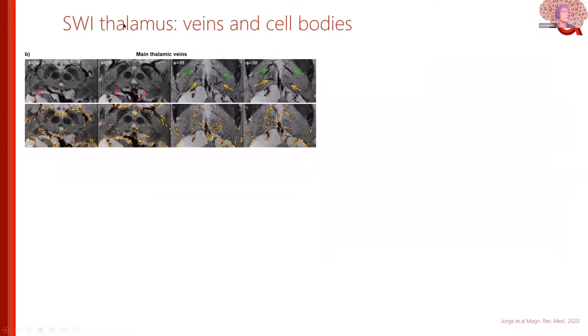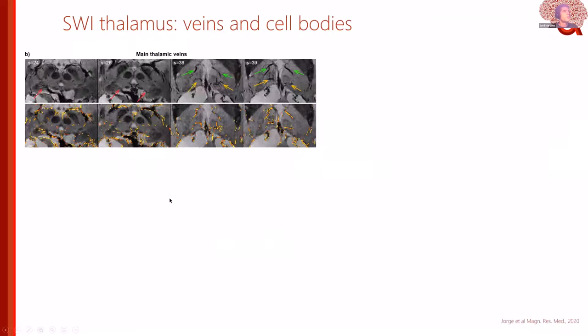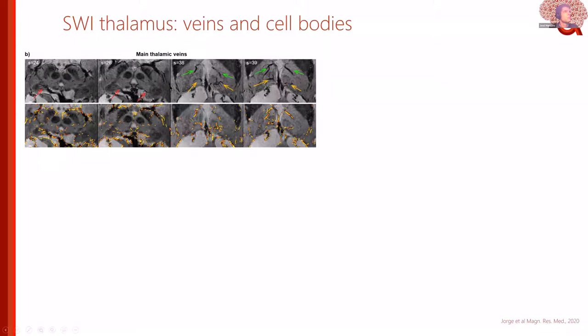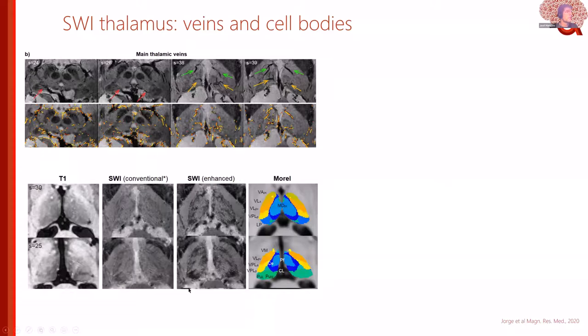QSM maps are still very useful; however, if you want high SNR, SWI seems to be the way to go. One issue with SWI is the very strong vein contrast, so you end up looking at veins rather than being able to extract thalamic anatomy. Work by Jorge Gonzalez-Castillo tried to identify these structures automatically, allowing a progression from standard T1-weighted and SWI images to enhanced images where you can really start seeing medial and lateral nuclei of the thalamus.